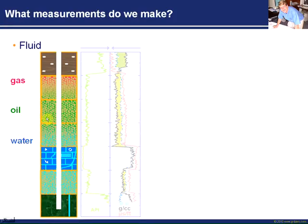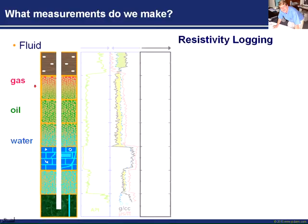Obviously the oil floats on top of the water, and the gas floats on top of that too. So how do we determine what fluid is in our reservoir? Well, we make what's called resistivity measurements - resistivity logging.